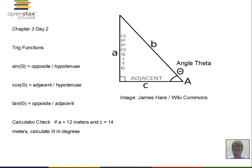To find the value of theta when we know tangent theta equals 0.857, we apply inverse tangent to both sides of the equation. The tangent and inverse tangent cancel on the left side, leaving just theta. Theta equals inverse tangent of 0.857, which gives 40.6 degrees. Check and see if your calculator gives that result.